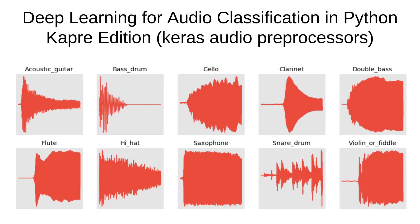Welcome to the first video of the remake of the audio classification series — we're going to be calling it the Capri edition. What we're going to be doing here is walking through conceptually what needs to happen to build a deep learning pipeline to classify audio data. The code will all be provided for you, so it should be very simple to plug in your own audio data and try out a couple of these architectures. We're going to start with 300 audio files of 10 classes and build our models around that data.